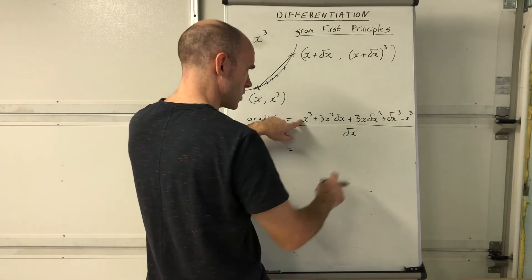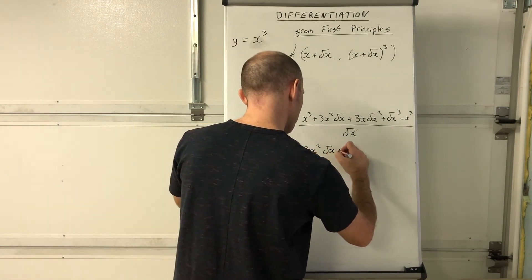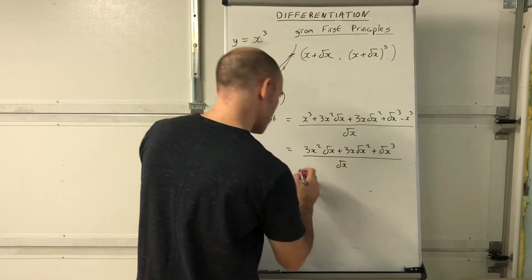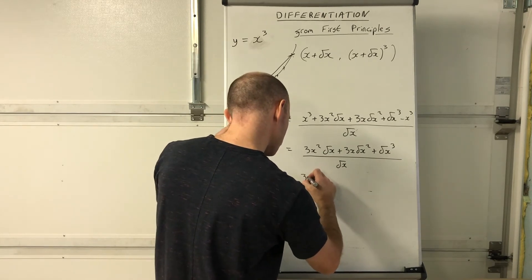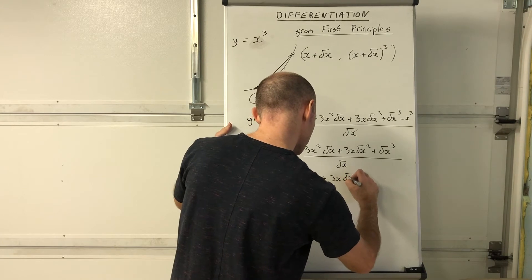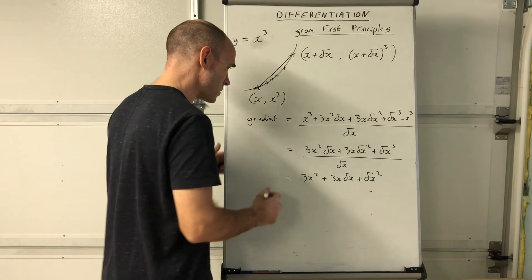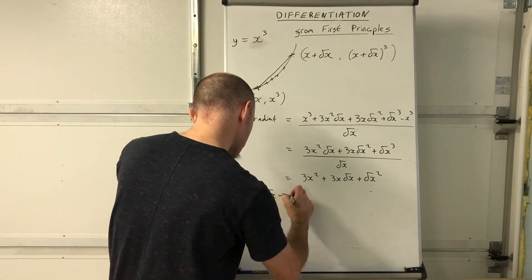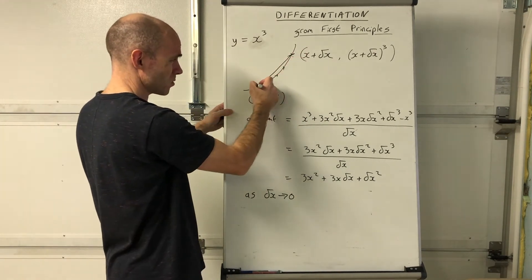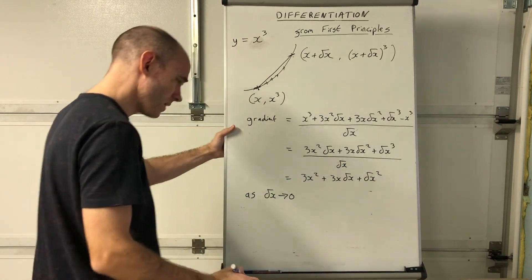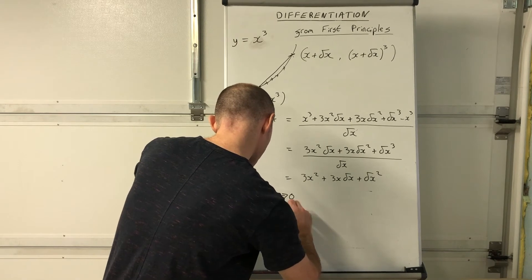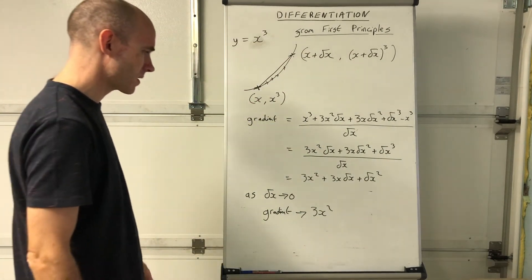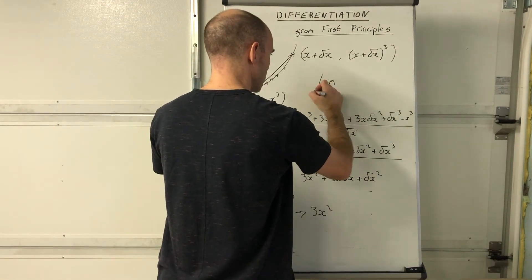The x³ terms cancel, leaving 3x²·delta x + 3x·delta x² + delta x³, all over delta x. Dividing throughout by delta x gives 3x² + 3x·delta x + delta x². As delta x tends towards zero, the last two terms tend to zero, so the gradient tends towards 3x². We write it formally as: limit as delta x tends to 0 of that expression equals 3x².